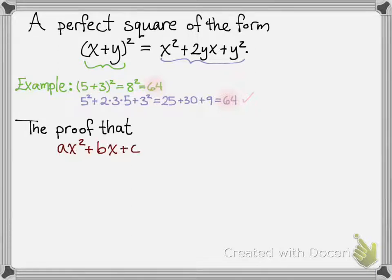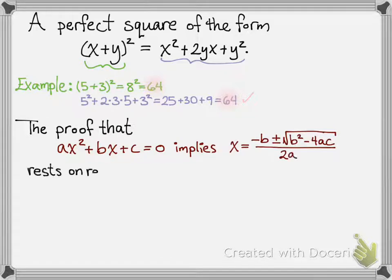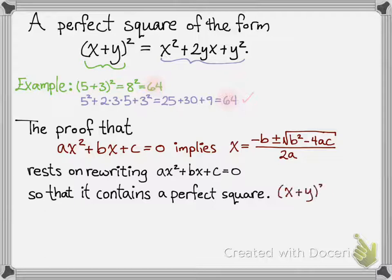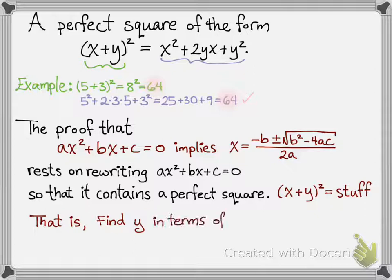The proof that ax squared plus bx plus c equals 0 implies x equals negative b plus or minus the square root of b squared minus 4ac all over 2a rests on rewriting the left-hand side so that it contains a perfect square. In other words, we want to get something of the form (x plus y) quantity squared equals some numbers, and we want to find y in terms of a, b, and c.